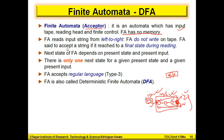FA reads the input stream from left to right — we will start reading from left to right and move in that direction. We are not going to write on the tape itself — this is an input tape only.